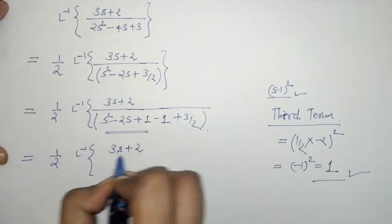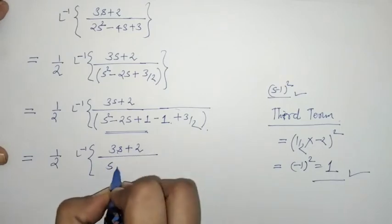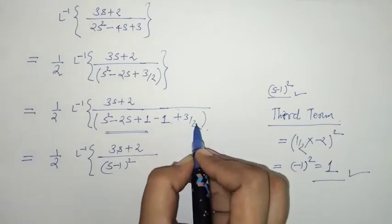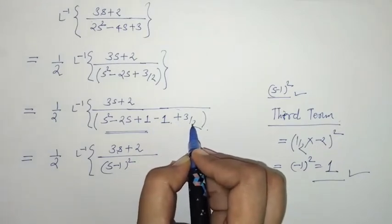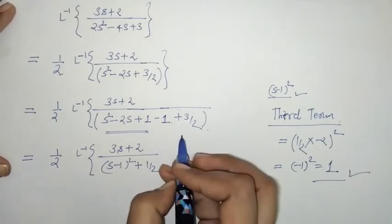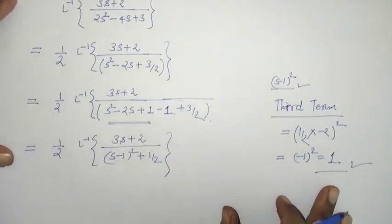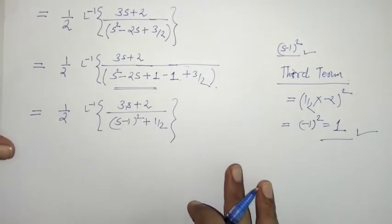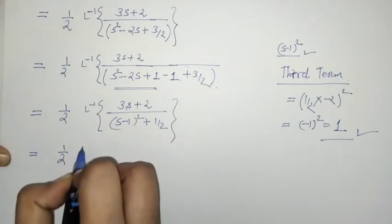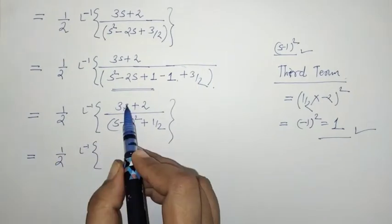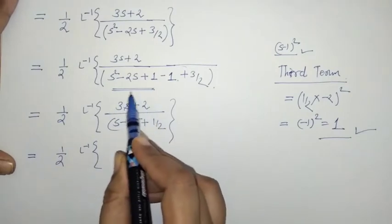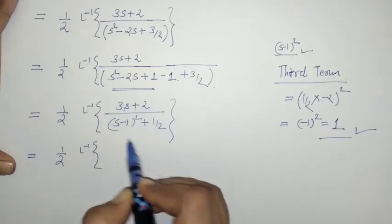In the denominator we now have the perfect square (s − 1)², and −1 + 3/2 = 1/2. So the denominator is (s − 1)² + 1/2. In the Laplace expression, we have the (s − 1) factor, and for applying the first shifting property, s in the numerator should be expressed in terms of (s − 1).